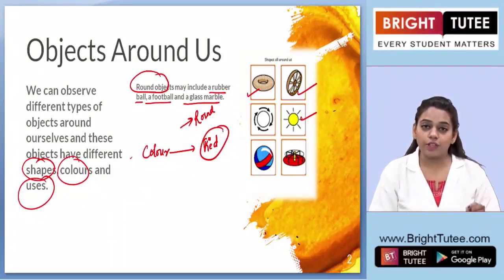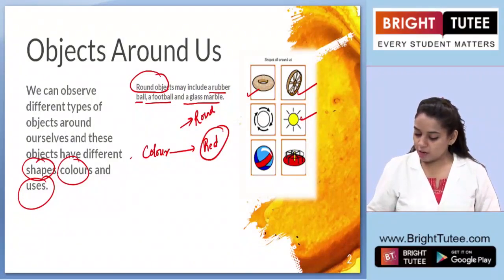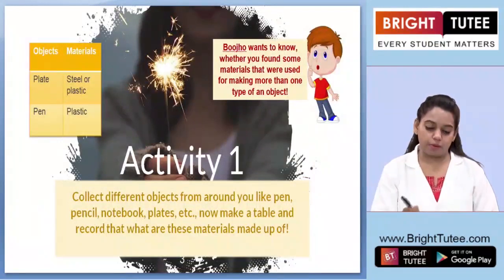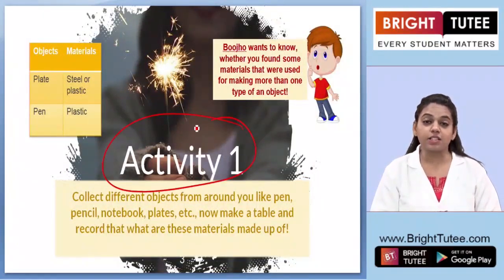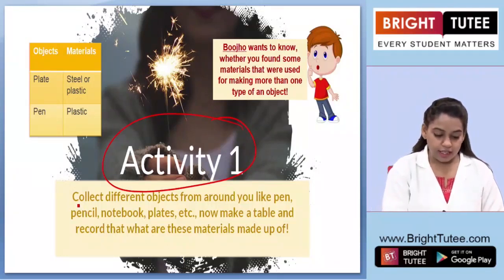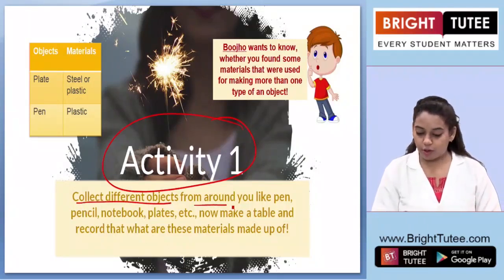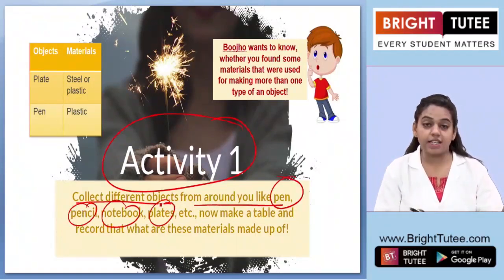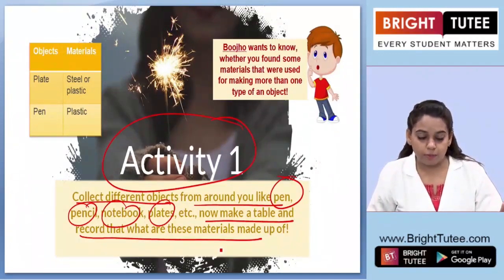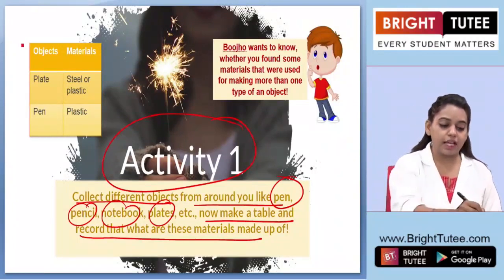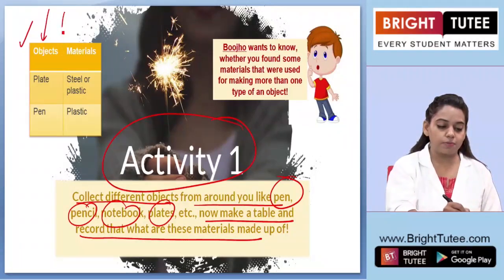These are just a few bases on which you can classify the objects. Let us now move ahead towards Activity Number One. It says: collect different objects from around yourself like a pen, pencil, notebook, plates, etc., and make a table to record what these materials are made up of.